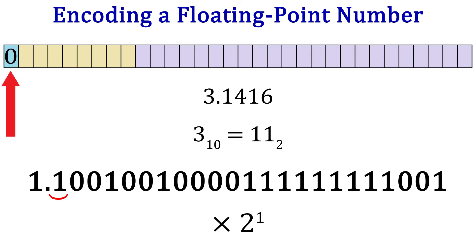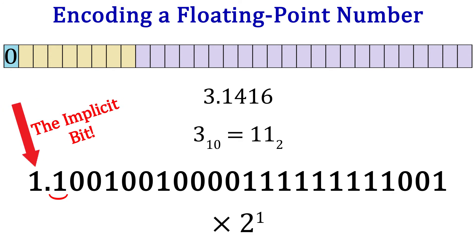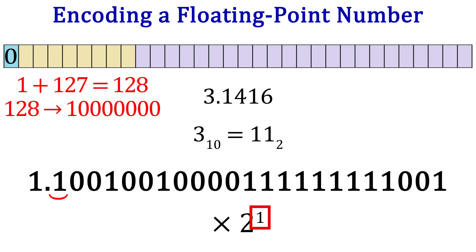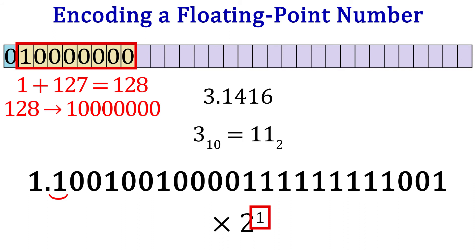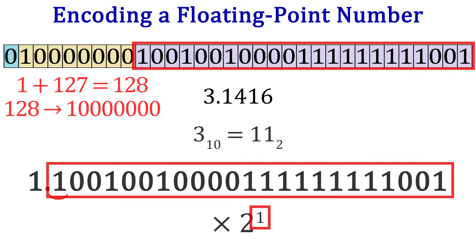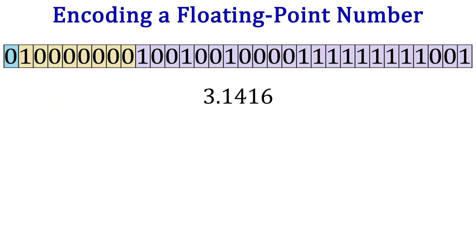Since we moved the decimal one place, we are multiplying by 2 to the 1st. Our number is positive, so the sign bit is 0. The 1 to the left of the decimal is implied, so it doesn't get coded. All we have to do now is bias the exponent and convert it to binary: 1 + 127 = 128, and 128 in binary is 1 followed by 7 zeros. Plugging it all in: sign bit is 0, the exponent is 10000000, and the significand is the binary approximation. This is 3.1416 in single precision floating point.